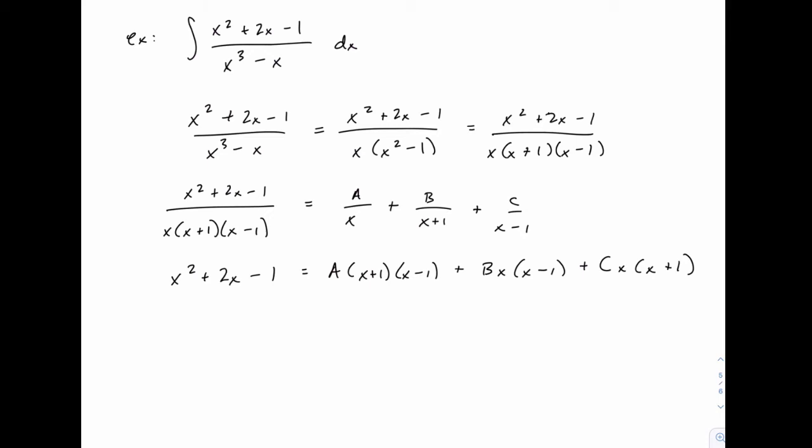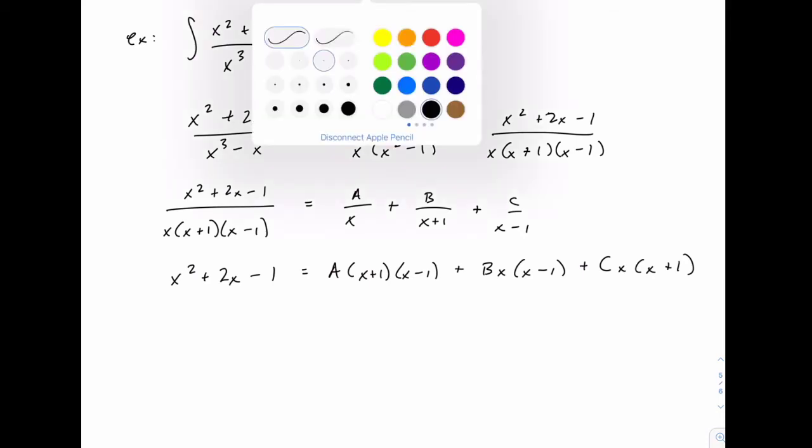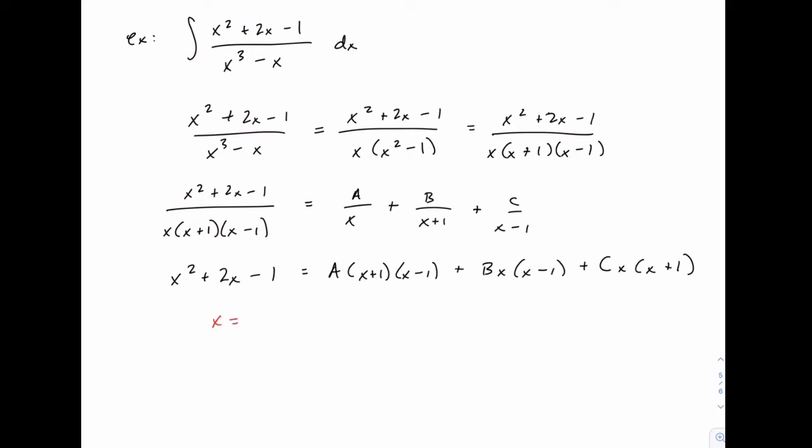But I prefer to pick test values, and we're going to choose ones that will make our lives as easy as possible. On the right-hand side, there's an x factor in several places, an x plus 1 in several places, and an x minus 1 in several places, which tells me the easiest values to use will be 0, 1, and negative 1. I could choose any three values I wanted, but these three will make the algebra as simple as possible.